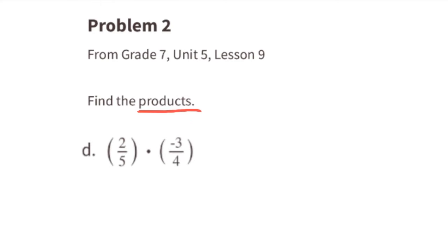Part d: two-fifths times negative three-fourths. This is a positive times a negative, so the answer is going to be a negative. We can cross-cancel: two goes into two once and two goes into four twice. One times three is three and five times two is ten. So the answer is negative three-tenths.